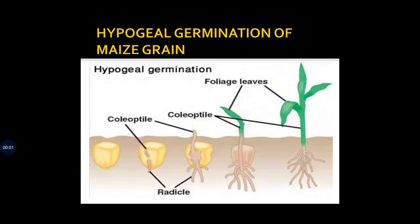Another example shown here is again a hypogeal germination, but in maize grain. Students, I hope you note the difference - in the previous example of hypogeal germination, we saw pea seed.